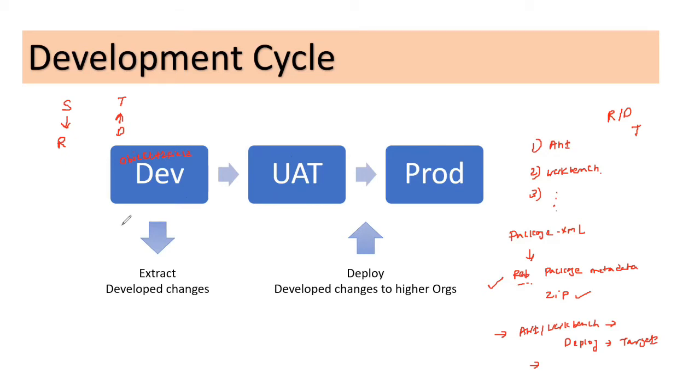So what I would do, I would use tools like Ant and Workbench to connect to this dev org, extract those metadata with the help of Ant and Workbench or the other tools that you have. And once that metadata is there, you would again take that metadata and deploy it to the UAT. I'm using Workbench as a tool here to demonstrate this example. You can also use Ant for your reference.